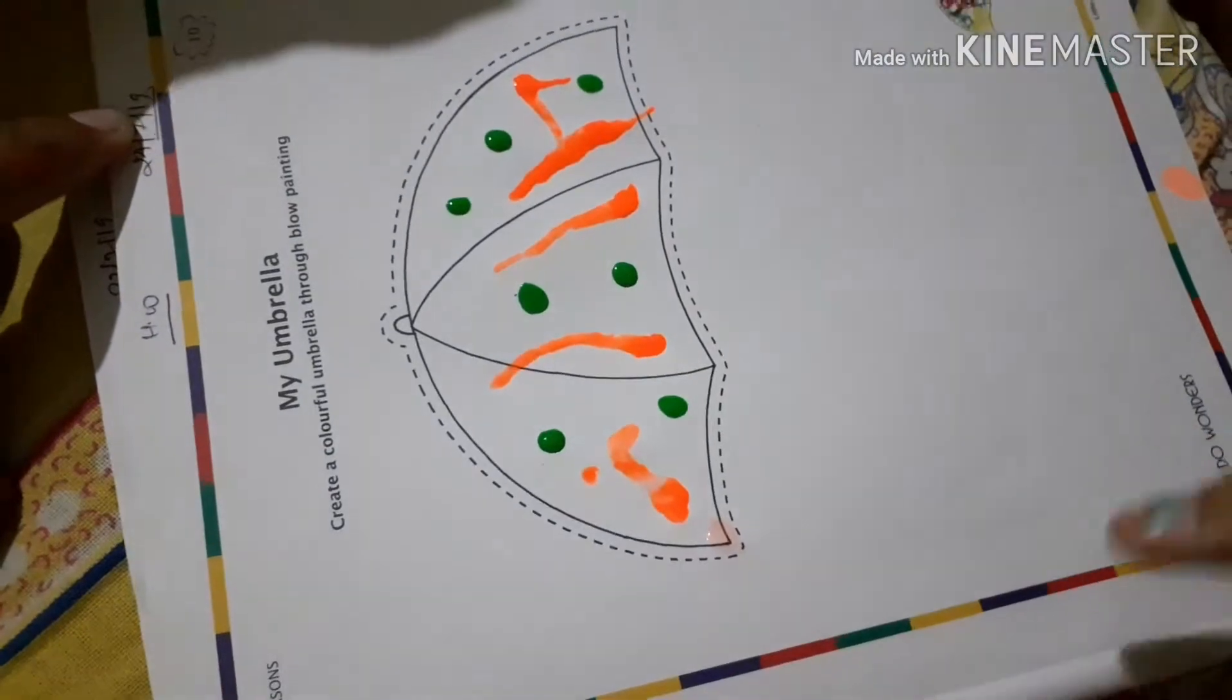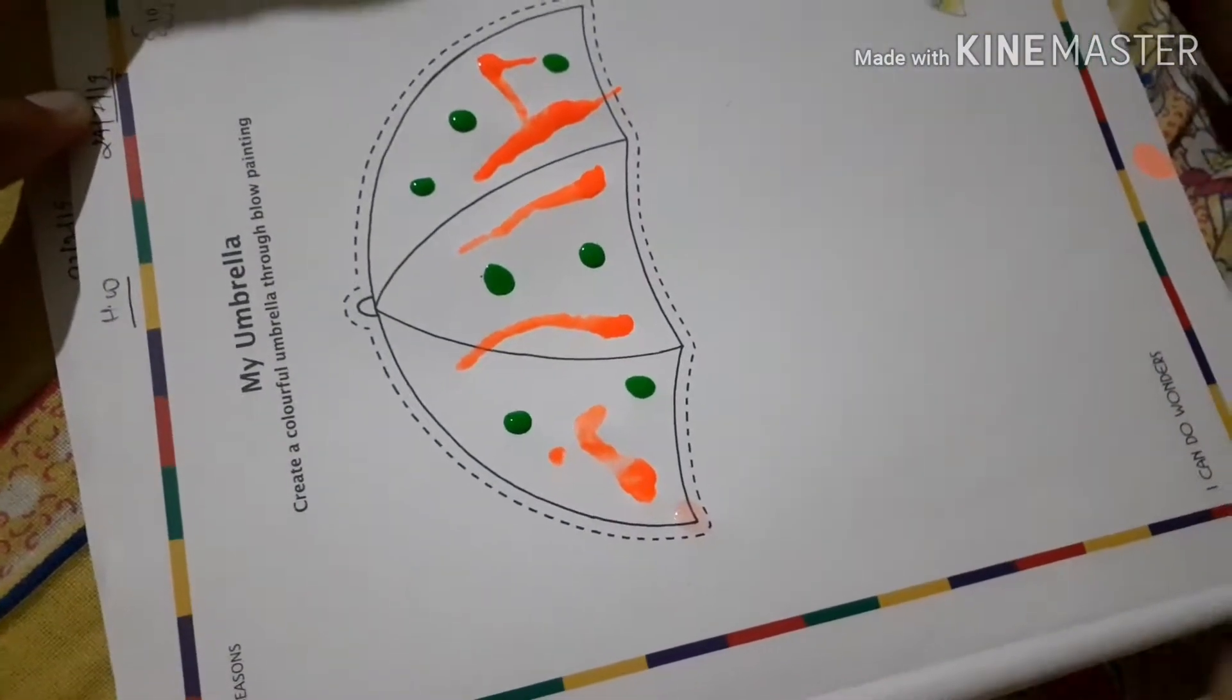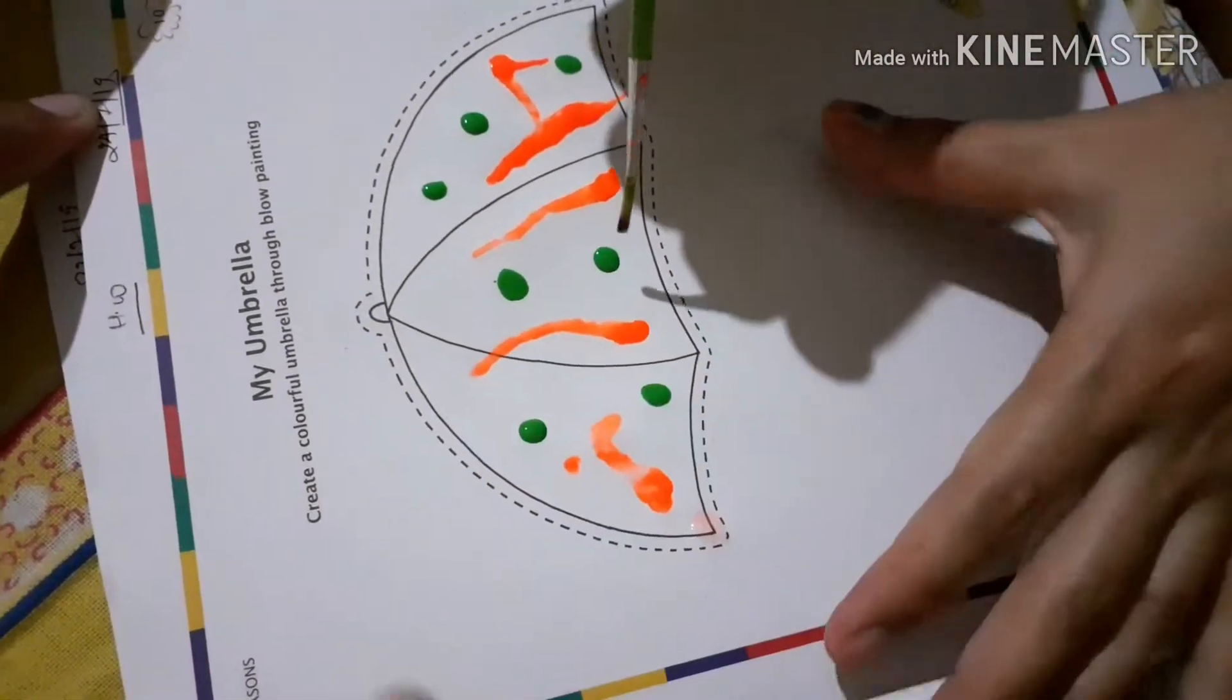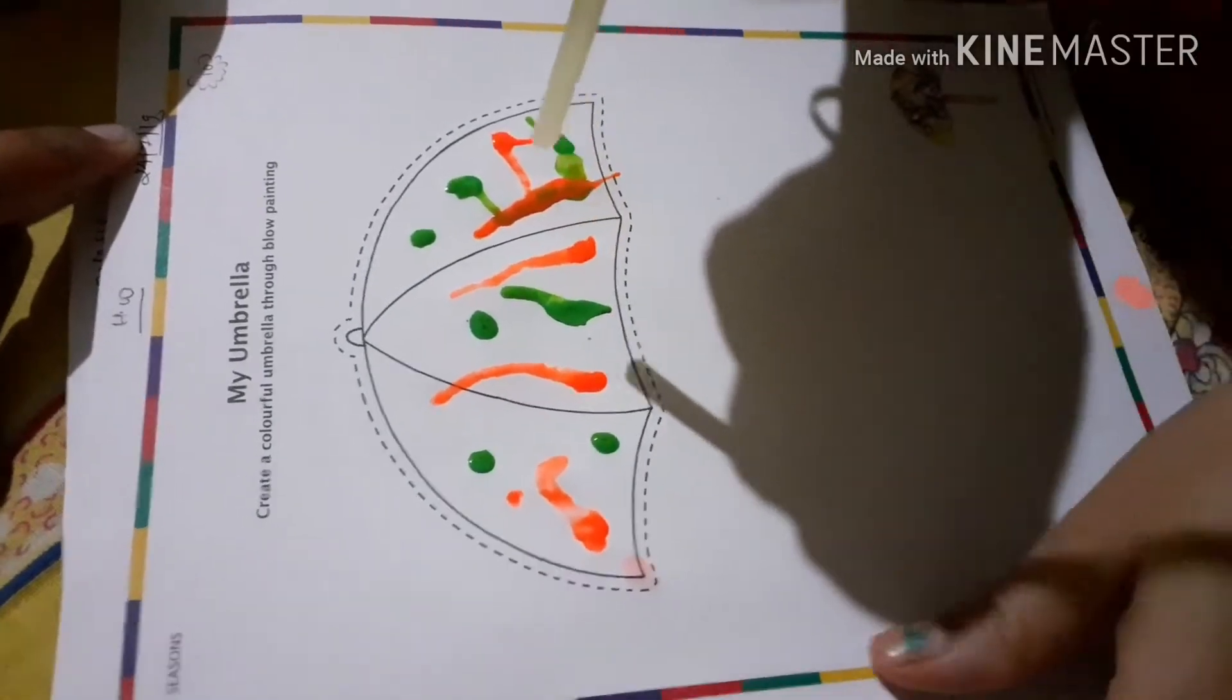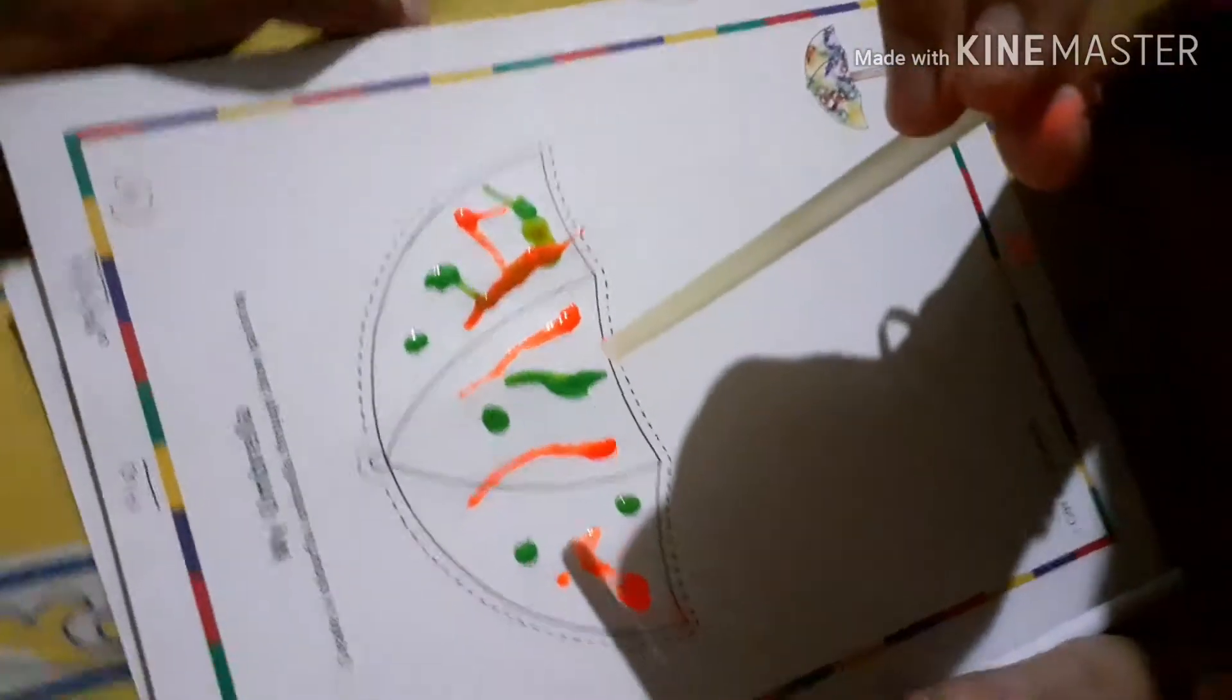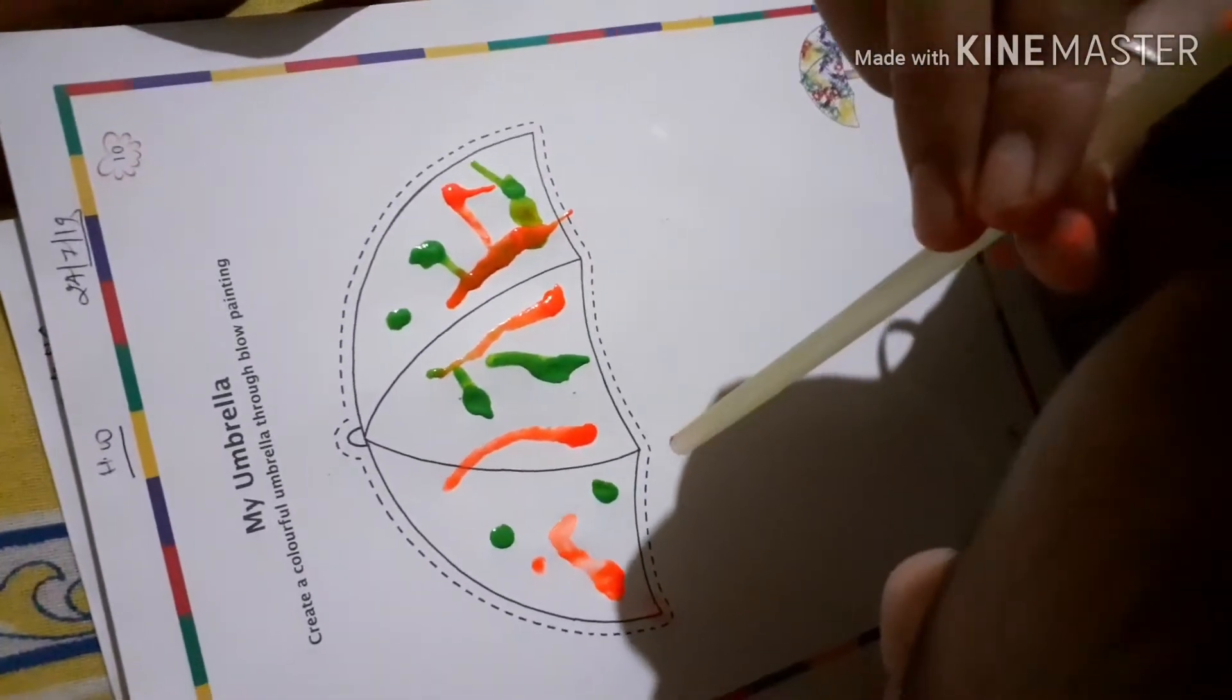See, after making dots you again have to blow air with pipe or straw. Like that. This color will also spread. See this color is also spreading.